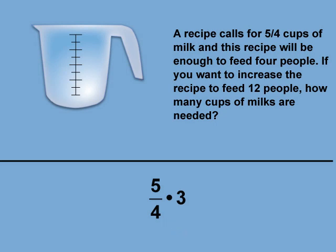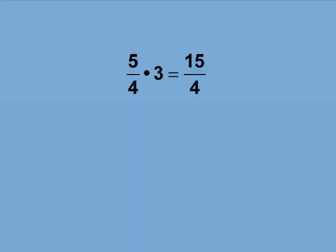Since there are no common factors greater than 1 between the denominator and the whole number, then multiply the whole number and the numerator. The result is the improper fraction 15 over 4, which becomes the mixed number 3 and 3 fourths.